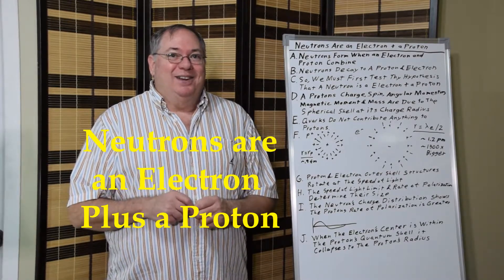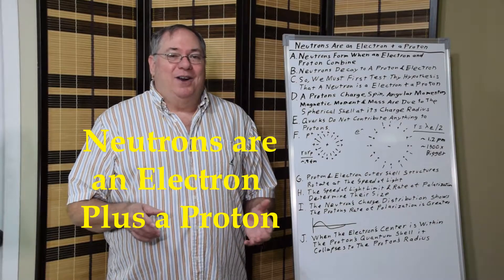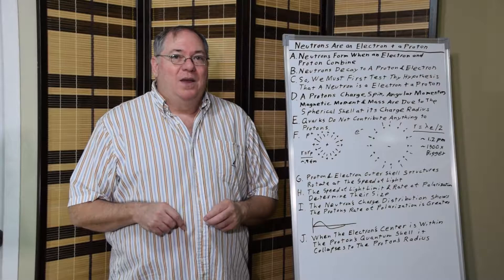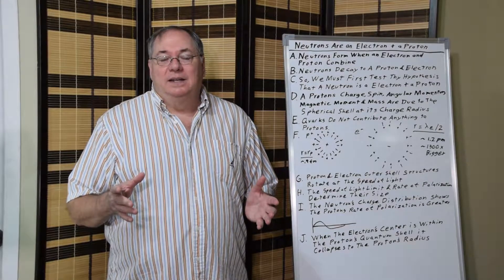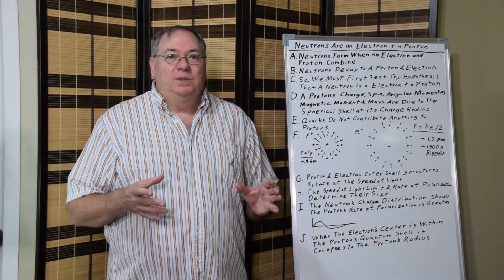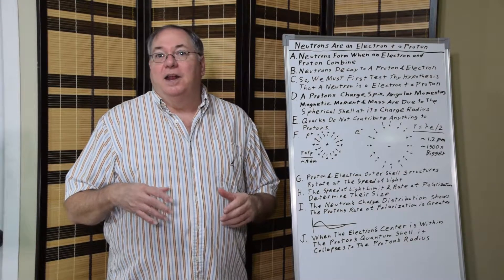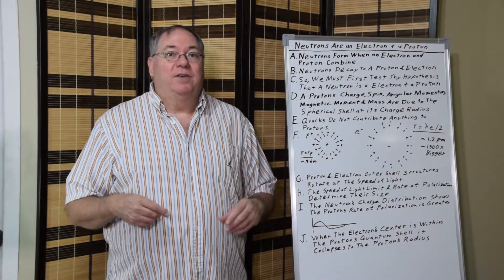Today I wanted to discuss how neutrons are a proton plus an electron. We know that a neutron forms when a proton combines with an electron, and then a neutron decays to a proton and an electron.